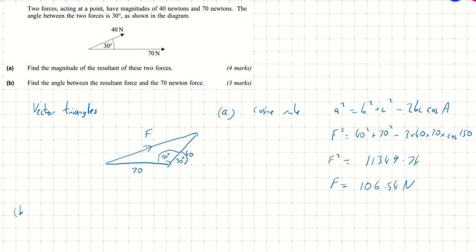Okay, so part B. Again, we can use the vector triangle that we drew. We're looking for the angle between the resultant force and the 70 Newton force. Well, that's this angle here that I just labeled on the diagram as theta.